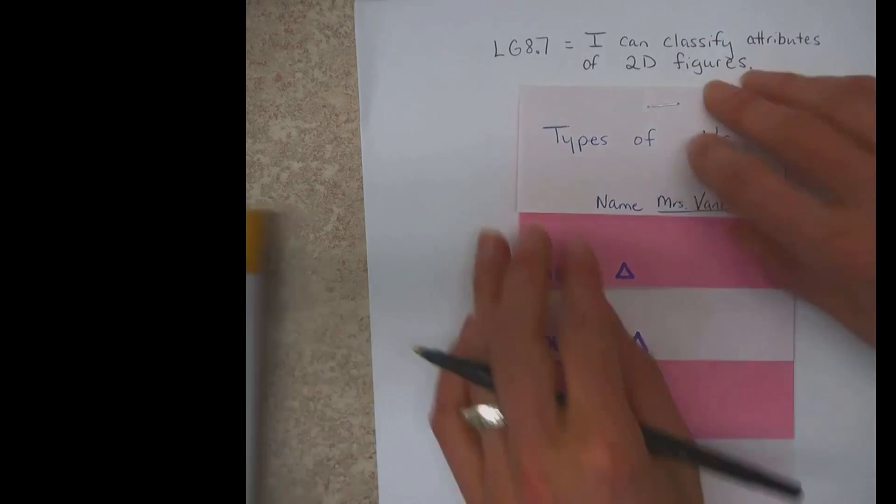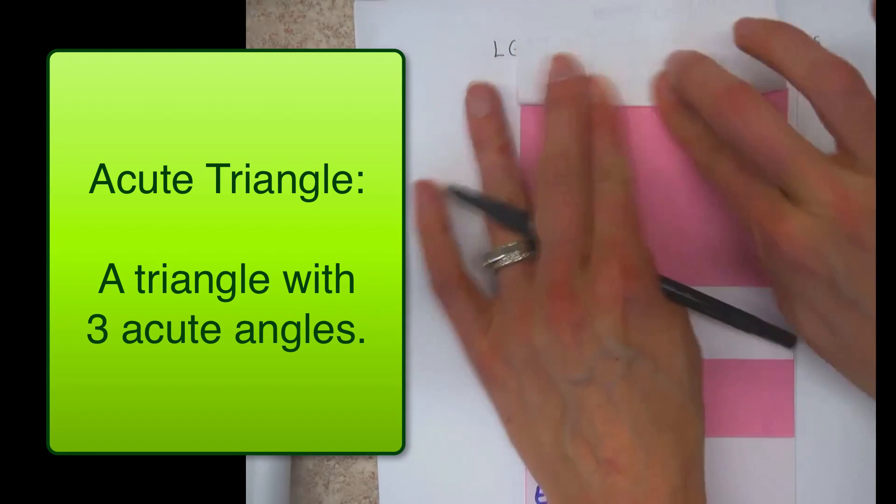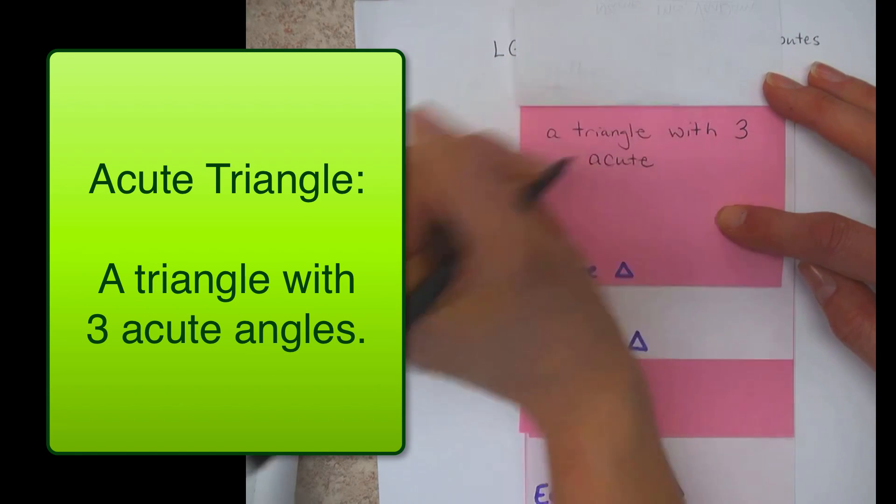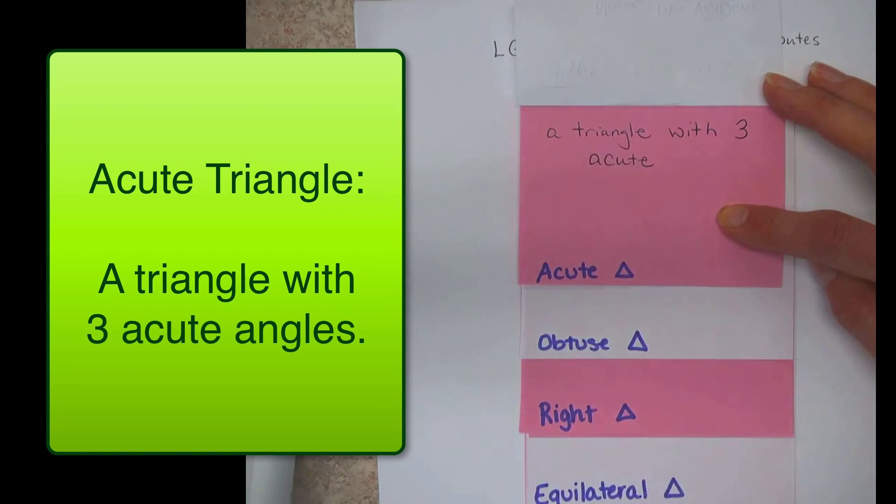The first one is an acute triangle. An acute triangle is a triangle with three acute angles. Let's remember, acute means less than 90 degrees. Like a cute little angle.